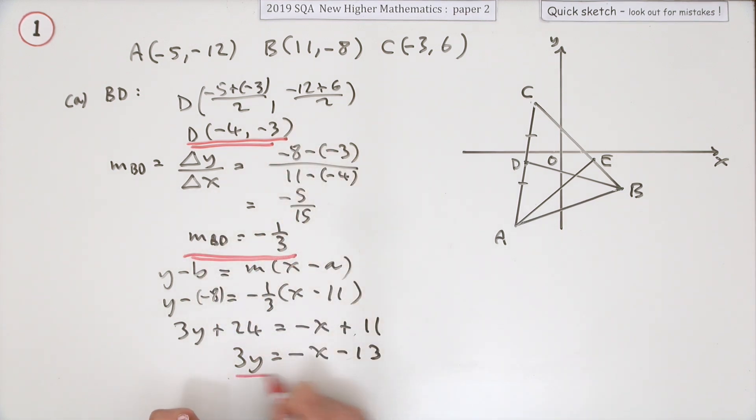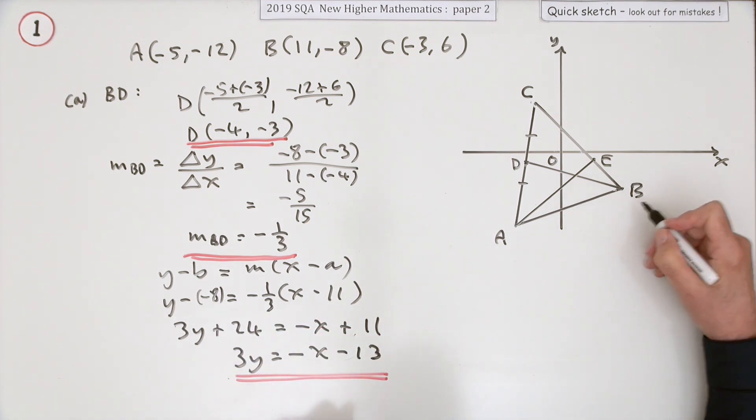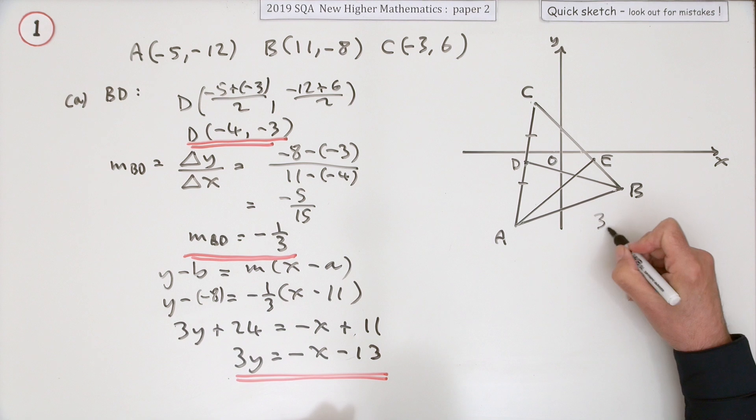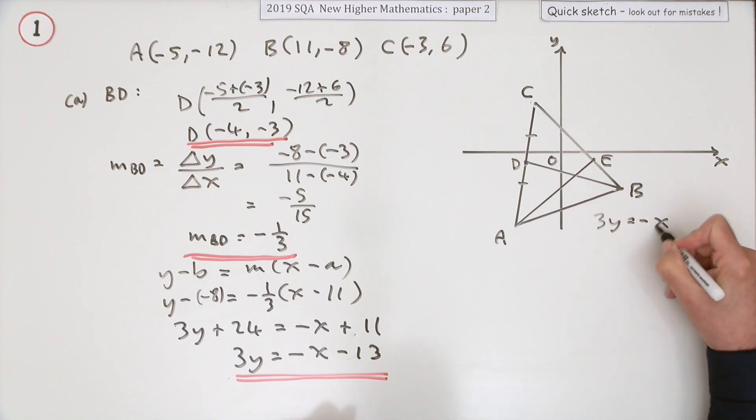Quite a few calculations and numbers to keep your eyes on, so you should really double check what you've done. I'll put a note of it over here. That was 3y is -x minus 13 for future reference.